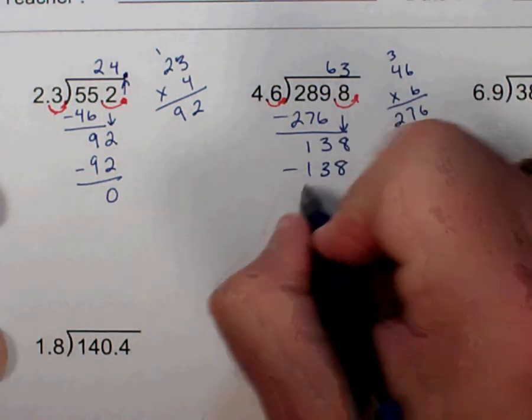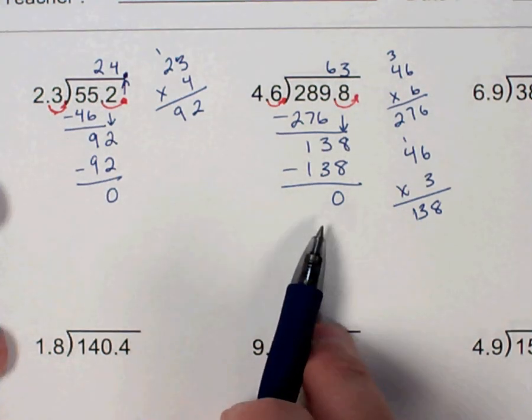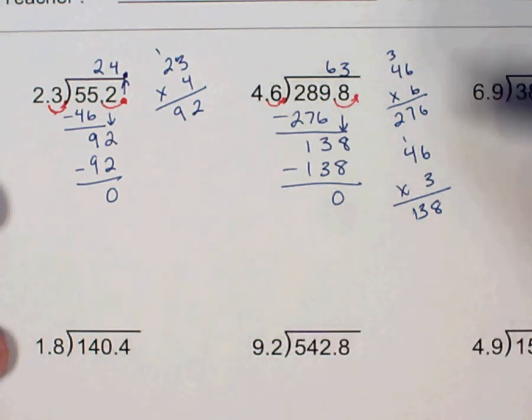Now all of these problems, you should get no remainder. So if you're getting no remainder, then you've done your computation correct. If you are getting a remainder, you've probably made a multiplication error somewhere in here. Let's go ahead and do one more.